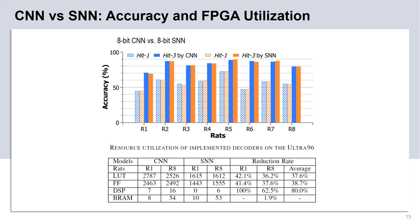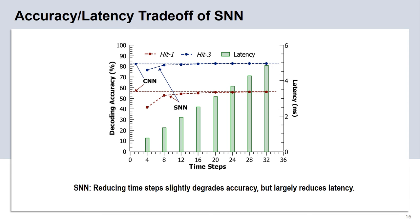The reason for the SNN's lower hardware cost is that it does not require multiplications as the CNN model does. We also observed the accuracy-latency tradeoff for the rate-based SNN. Under 32 time steps, the SNN model achieves very similar decoding accuracy compared to the CNN model. As we reduce the time steps for the SNN, the accuracy of SNN inference will gradually drop, and the SNN inference latency will decrease linearly. There seems to be no obvious accuracy drop as we reduced the SNN inference time steps from 32 to 16. We verified the accuracy drop trend using both the HIT1 and HIT3 accuracy metrics.